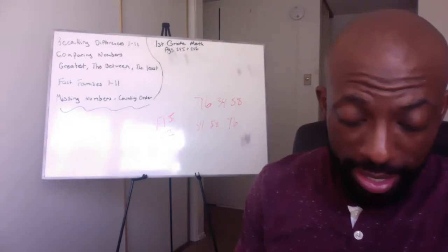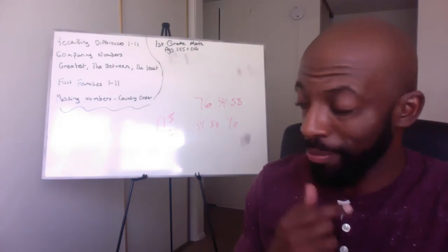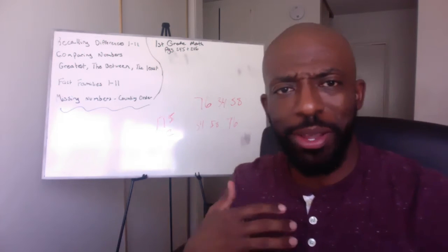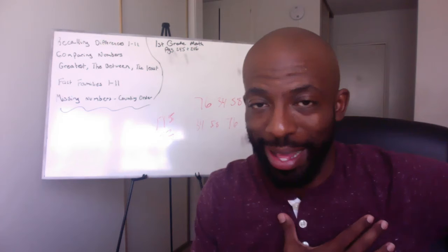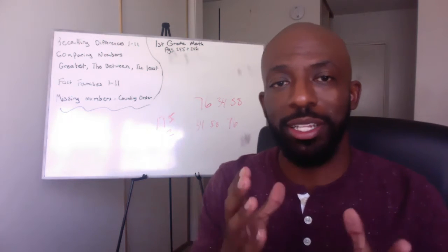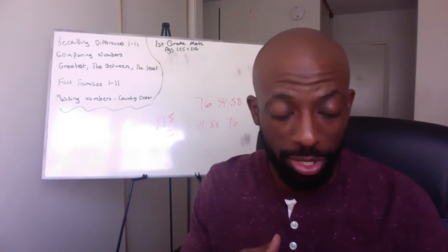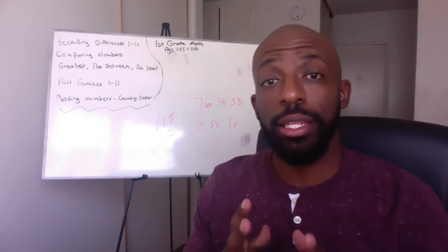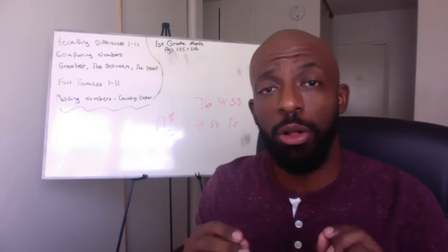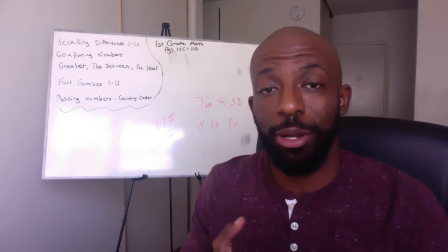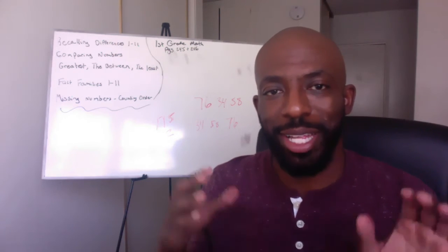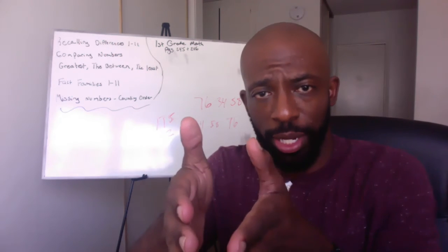Now let's move on to number two. We have: write these numbers in order from least to greatest. I already did that problem for you — 76, 34, 58. For the second version — 52, 81, and 23 — look at the number in the tens place. See which one is the smallest; that's going to be your number for least. Then look which one is the biggest; that's what you put for greatest. So that's least, in between, greatest.